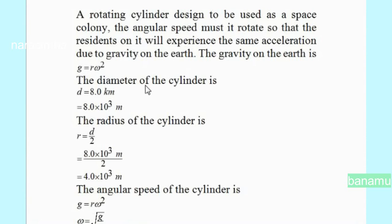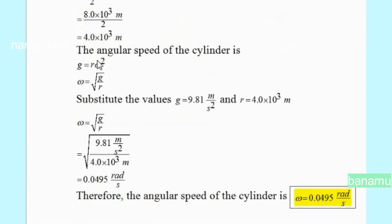The diameter of the cylinder is d equals 8 km, that is d equals 8 into 10 to the power of 3 meters. The radius of the cylinder is r equals d divided by 2, so r equals 8 into 10 to the power of 3 meters divided by 2, giving r equals 4 into 10 to the power of 3 meters.